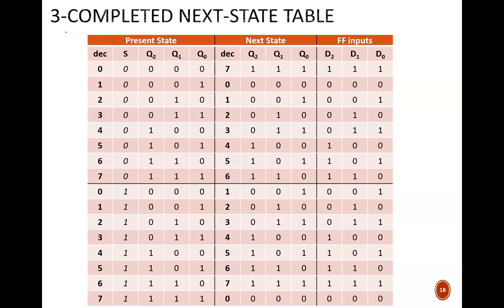Here we have the completed next state table. Be sure to compare your results with these and correct any discrepancies. The only special thing I'll note is that when S equals one, the table shows a count up, so five become six, six become seven, and seven become zero.